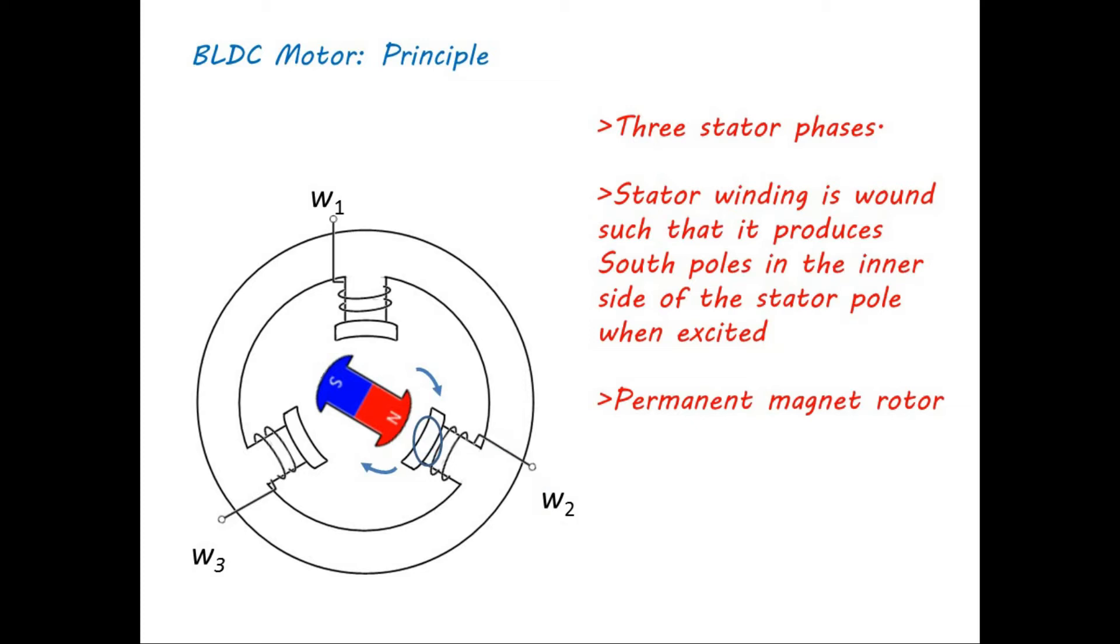After some time, excitation of W2 is removed and W3 is energized. And as a result, south pole is generated under W3 winding, and rotor completes another 120 degree rotation.